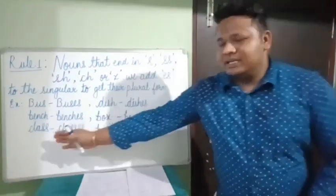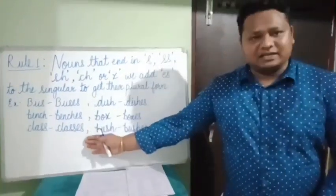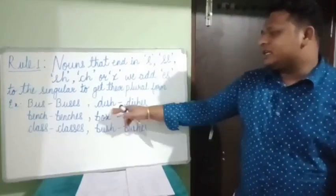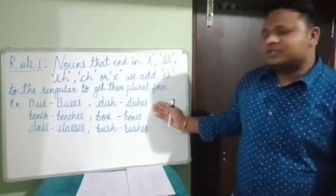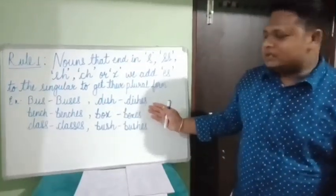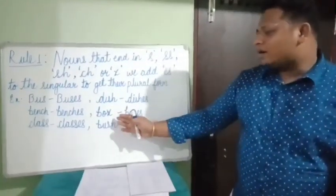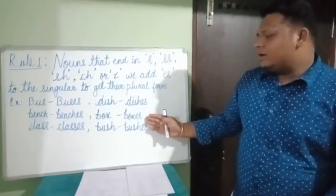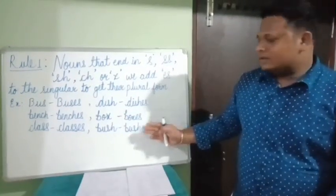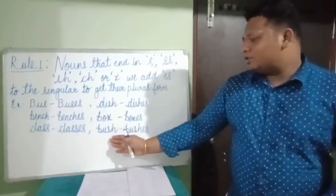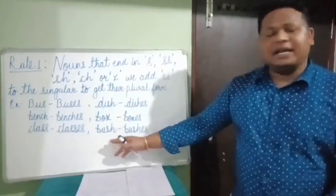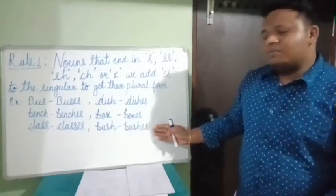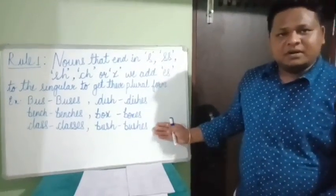Class ends with double S, so classes. Dish ends with SH, so dishes. Box ends with X, so boxes. Bush again ends with SH, so bushes.